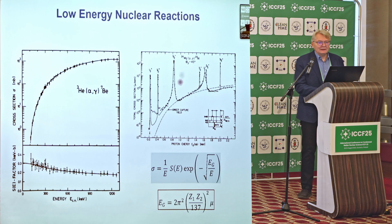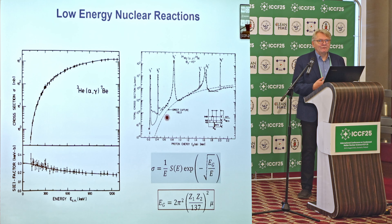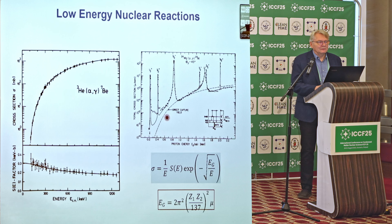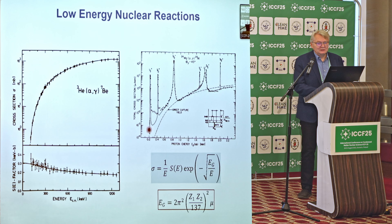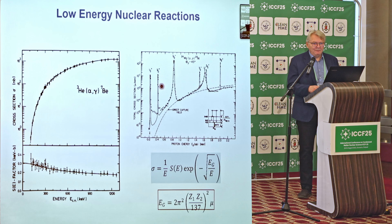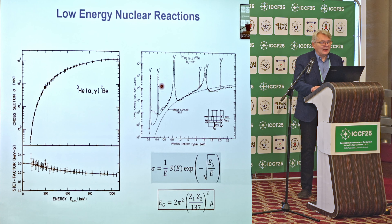In other cases, such as the magnesium-p-gamma reaction, the S-factor is not flat. There are resonances of the compound nucleus — aluminum-25 — with some unstable states. By changing the incident energy of the protons, we can observe the structure of this compound nucleus step by step, seeing resonances of different widths and amplitudes. This is standard nuclear astrophysics.